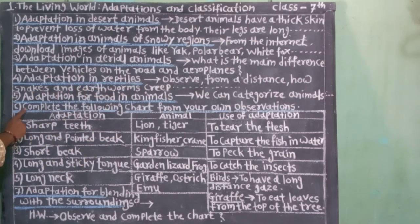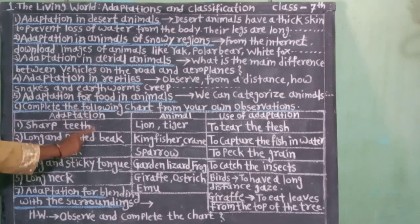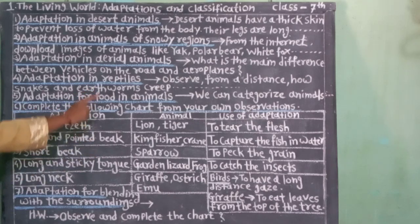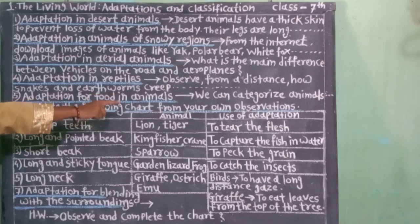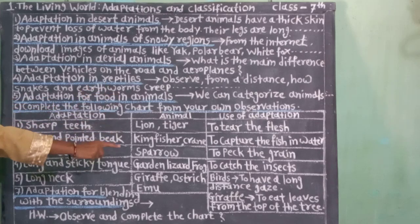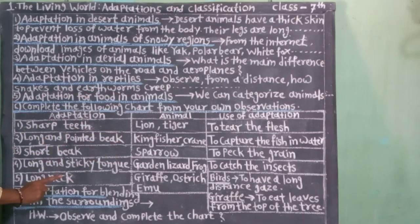जालेले अनुकुलन: आखूड चोच. प्राणी: चिमणी. अनुकुलनाचा उपयोग: दाणे टिपण्यासाठी.